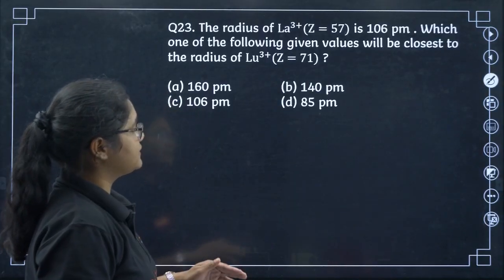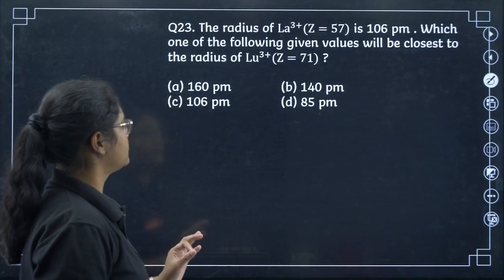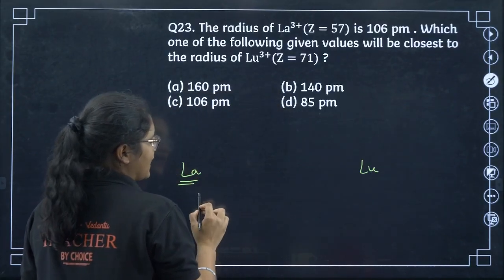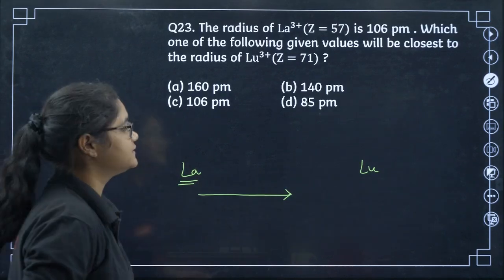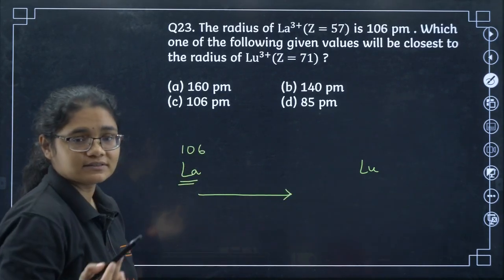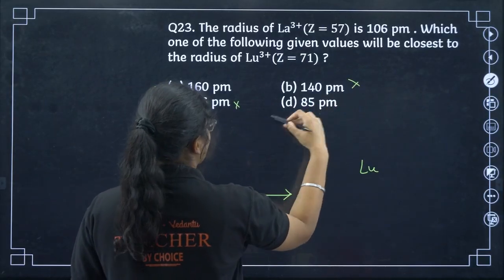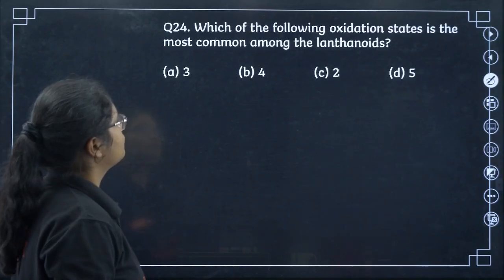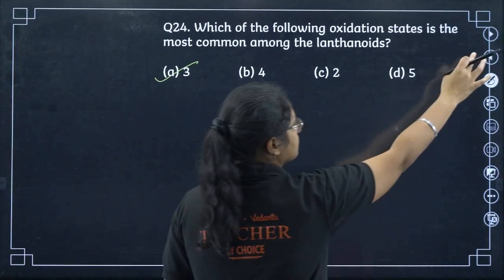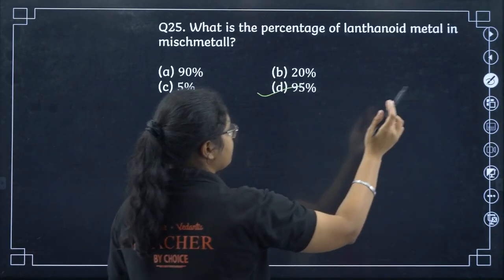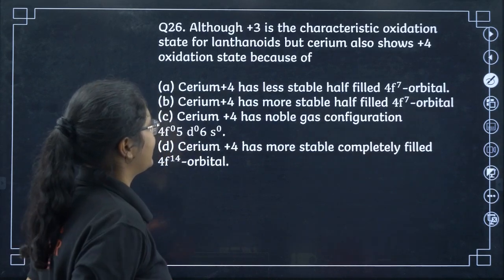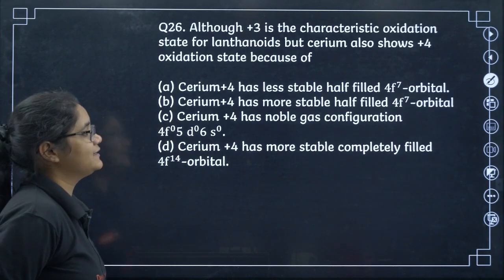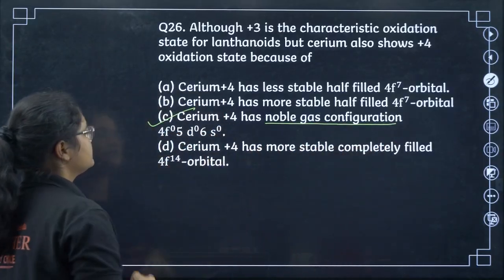The radius of La3+ is 106 picometers. The radius closest to lutetium Lu3+ will be less than 106 due to lanthanide contraction, since lanthanum is the starting element and lutetium is the last — option D. The most common oxidation state among lanthanoids is +3. The percentage of lanthanide in misch metal is 95% — option D. Cerium also shows +4 oxidation state because in +4 it gains a noble gas configuration, making it more stable — option C.